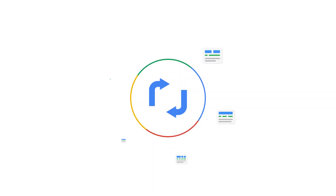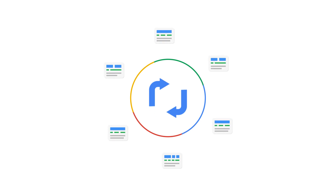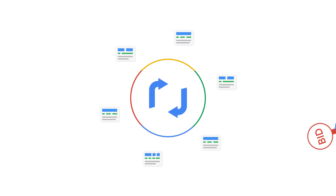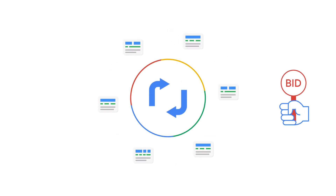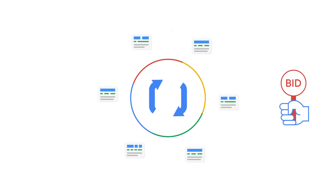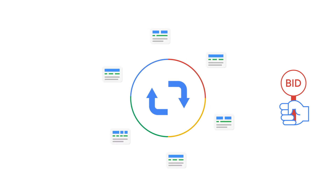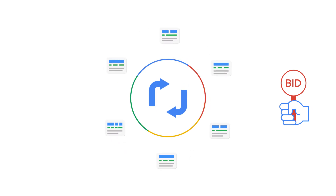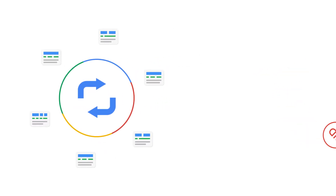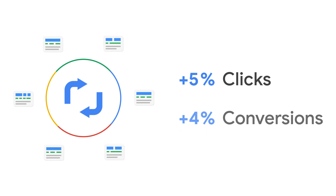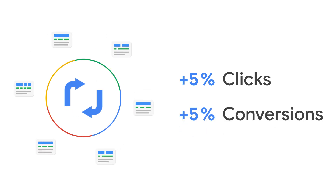Once enabled, Google's machine learning will prioritize ads that are expected to perform best within your ad group. Optimizing your rotation will show your best ads more often, which can lead to a potential 5% increase in clicks and conversions.